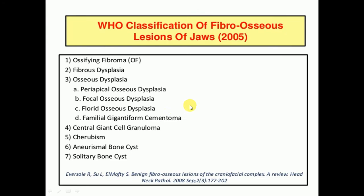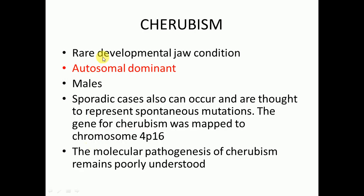Hello guys, this is Dr. JK. Today we will discuss cherubism. In our previous lectures we studied ossifying fibroma, fibrous dysplasia, osseous dysplasia, and central giant cell granuloma. Cherubism is a rare developmental condition and it is an autosomal dominant condition, most commonly presenting in males. Sporadic cases can also occur.